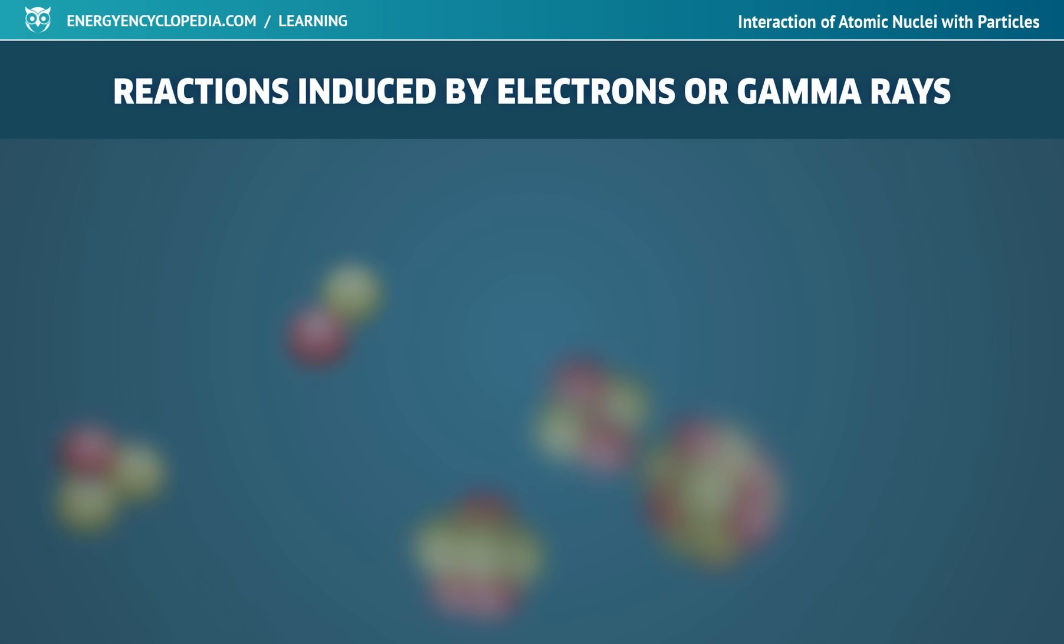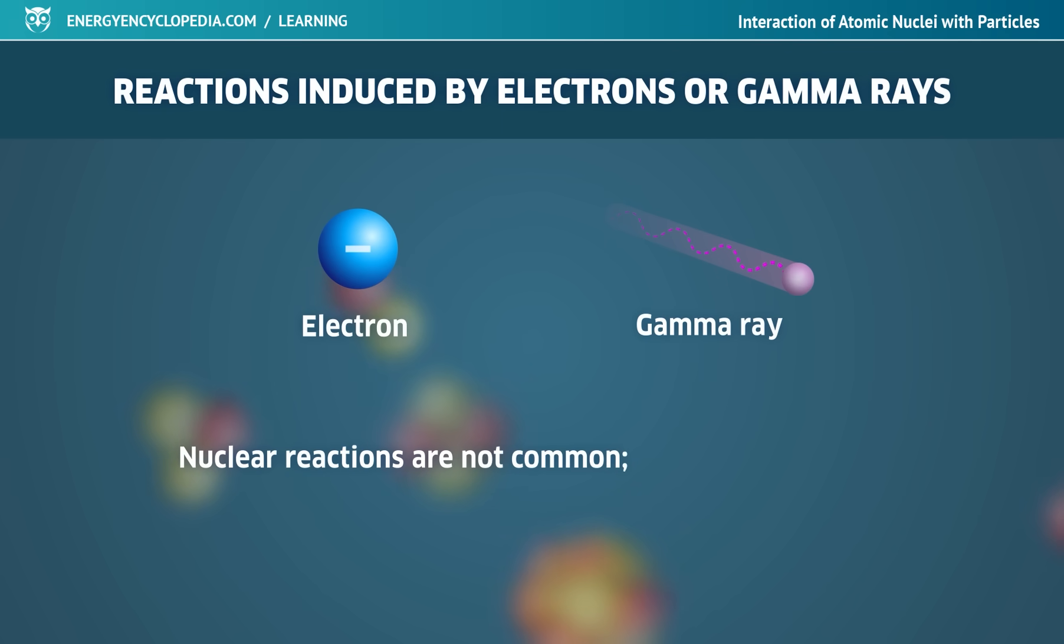For the sake of completeness, we can add that nuclear reactions can also be triggered by electrons or strong gamma radiation, so-called photonuclear reactions. But it must be added that they are not so common and in both cases, it is necessary for the electrons and quanta of gamma radiation to have considerable energy.